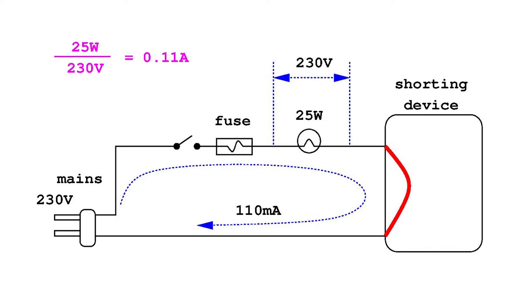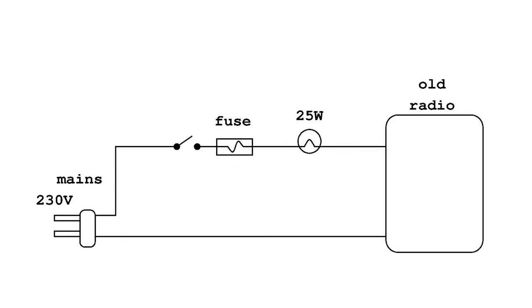When an old radio is tested with a dim bulb tester, it would be appropriate to start with a low-power light bulb, progressively increasing the power of the light bulb if, in the meantime, no short circuit and no abnormal current draw is detected.